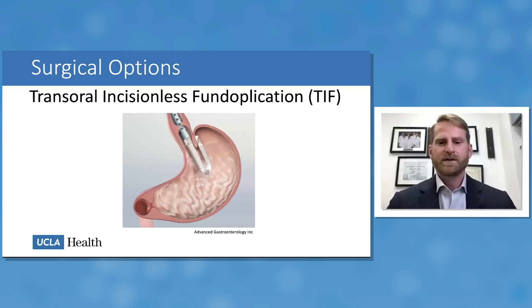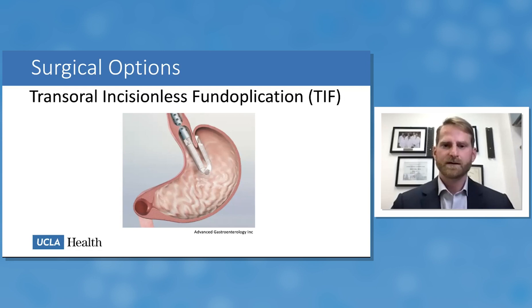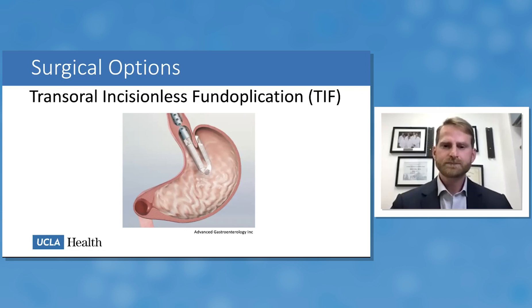Transoral incisionless fundoplication, or TIF, is a newer option. It is essentially a fundoplication performed with a stapler passed through the mouth and esophagus under endoscopic vision. While the procedure itself is incisionless, abdominal incisions may still be required if the hiatal hernia needs repair. It has good outcomes and is slightly less anatomically altering than a surgical fundoplication.